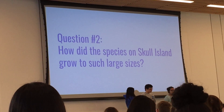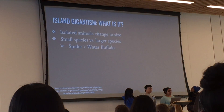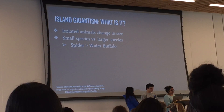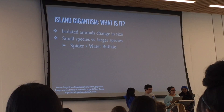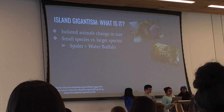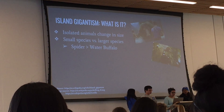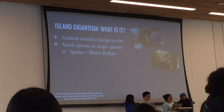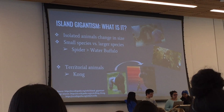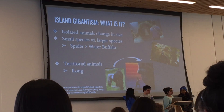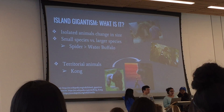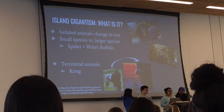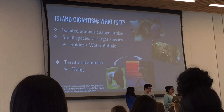Our second question is how did the species on Skull Island grow so large. The first principle we're discussing is island gigantism, which states that on an isolated island, small species will evolve to become larger and large species will evolve to become smaller. We see this on Skull Island — there's a very large spider and a very large water buffalo, but proportionately the spider is much bigger. This follows island gigantism since the spider grew to a greater extent. Kong's large size also fits, as island gigantism notes that territorial animals tend to grow larger, and Kong is essentially the protector of the island.